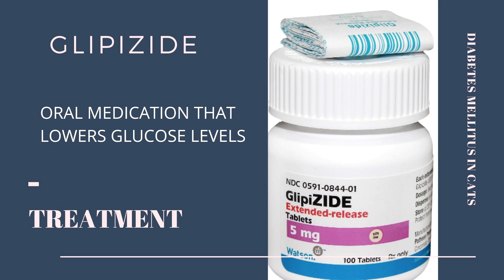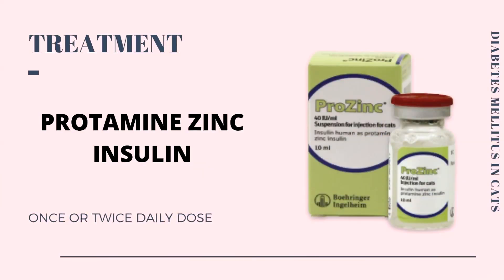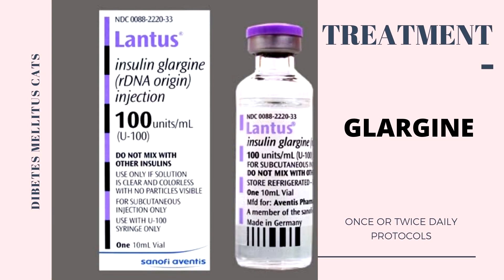Several forms of insulin are available and each has different duration of action. Protamine zinc insulin, also known as PZI, can be given once or twice daily, and is most available via compounding pharmacies. Glargine, also known as Lantus, is a sustained release insulin which can be used on a once or twice daily schedule.